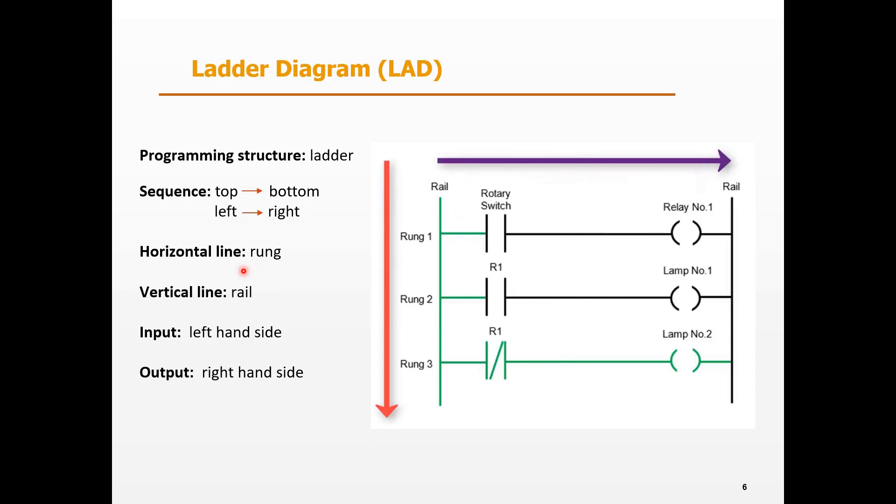The horizontal line is called RUN and the vertical line is called REL. The inputs are on the left-hand side and the output is on the right-hand side.